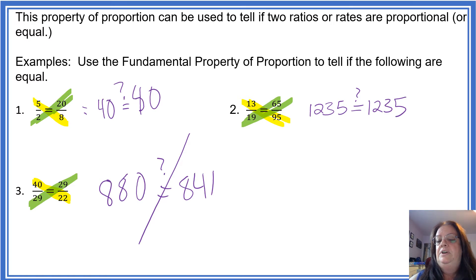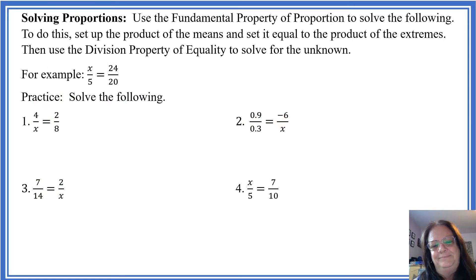Moving on. Now we're going to use the fundamental property of proportions to solve the following problems. To do this, what we're going to do is multiply the x and the 20 and the 24 and the 5 and then solve. Makes life very easy. So that means I'm going to have 20x equal to 5 times 24.